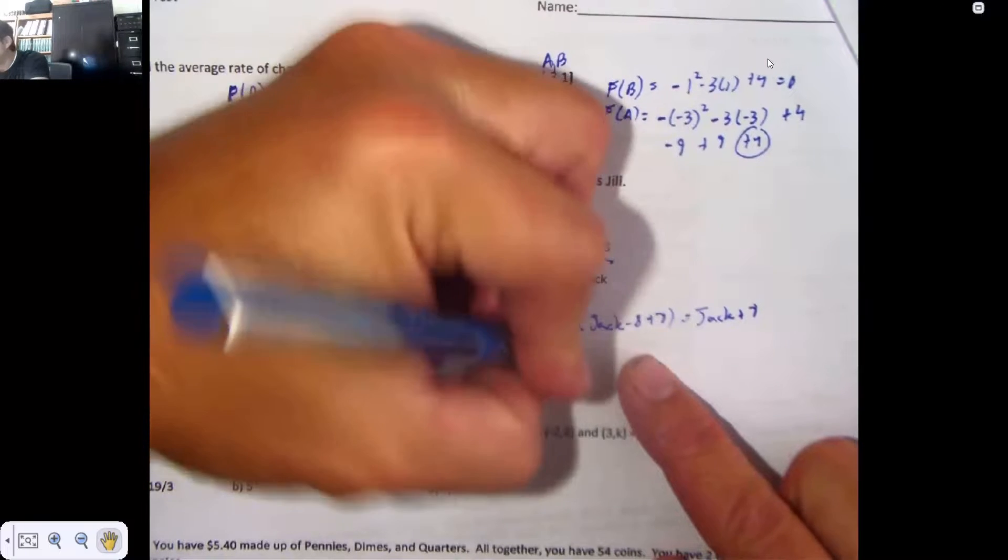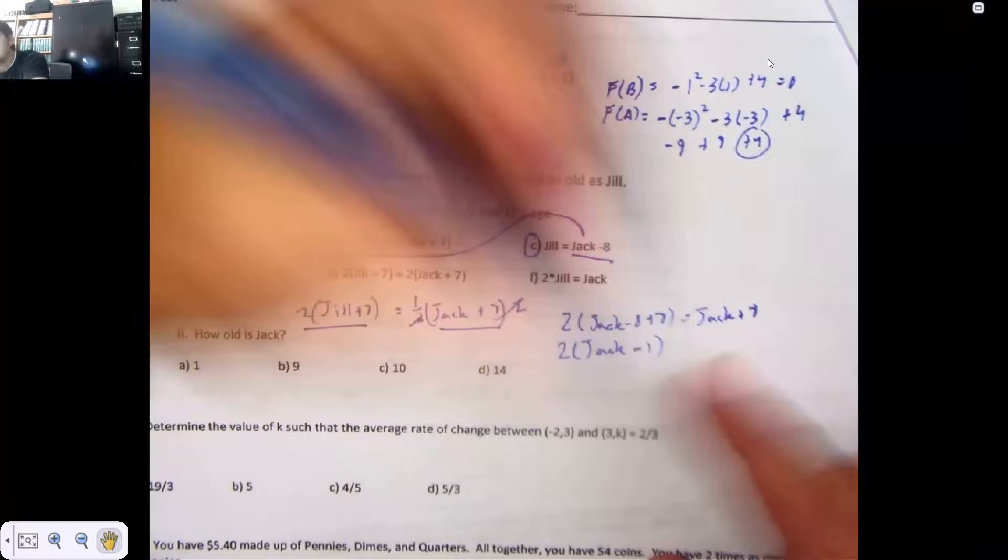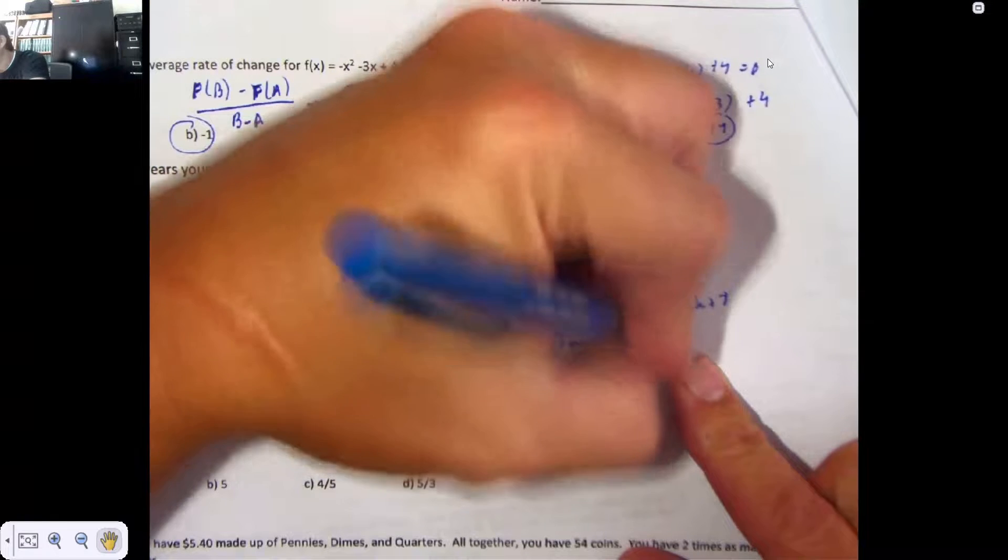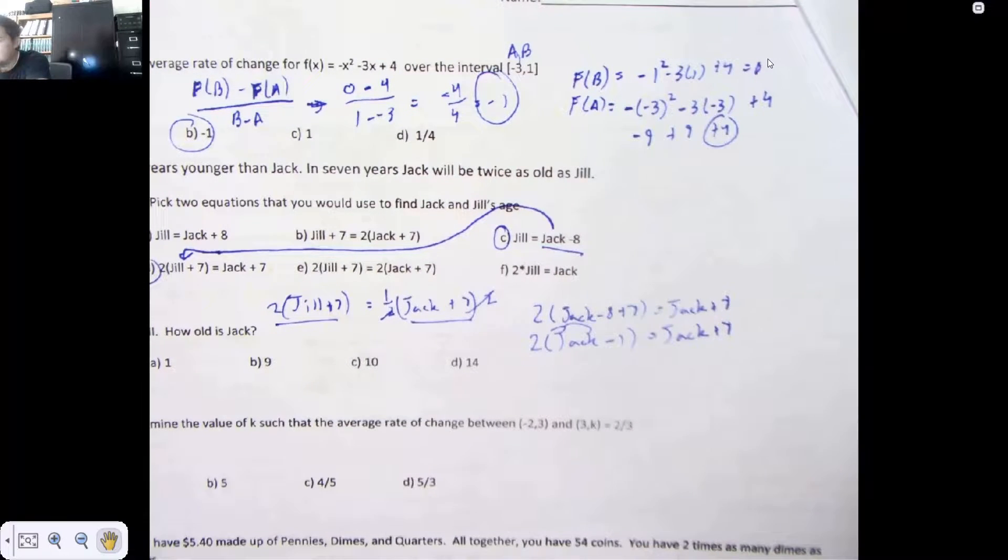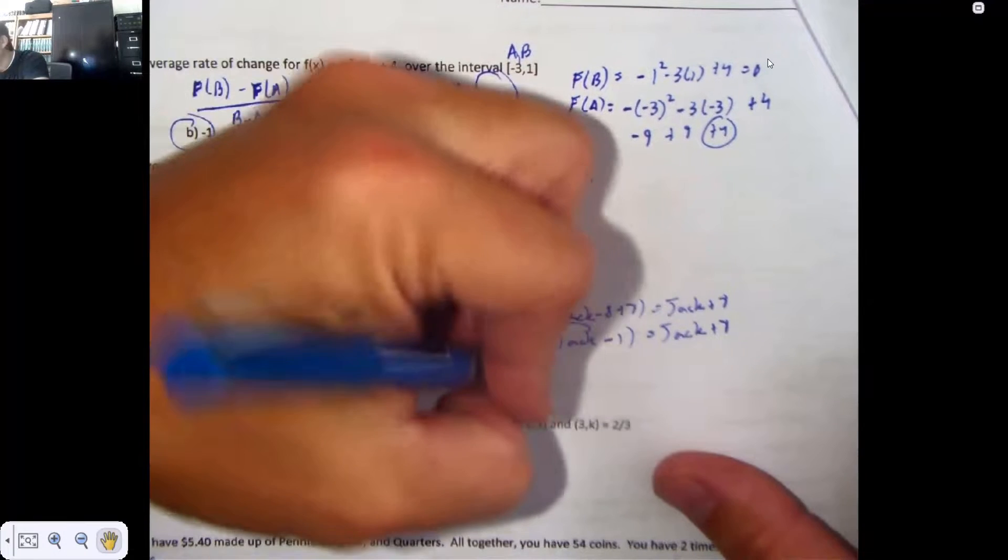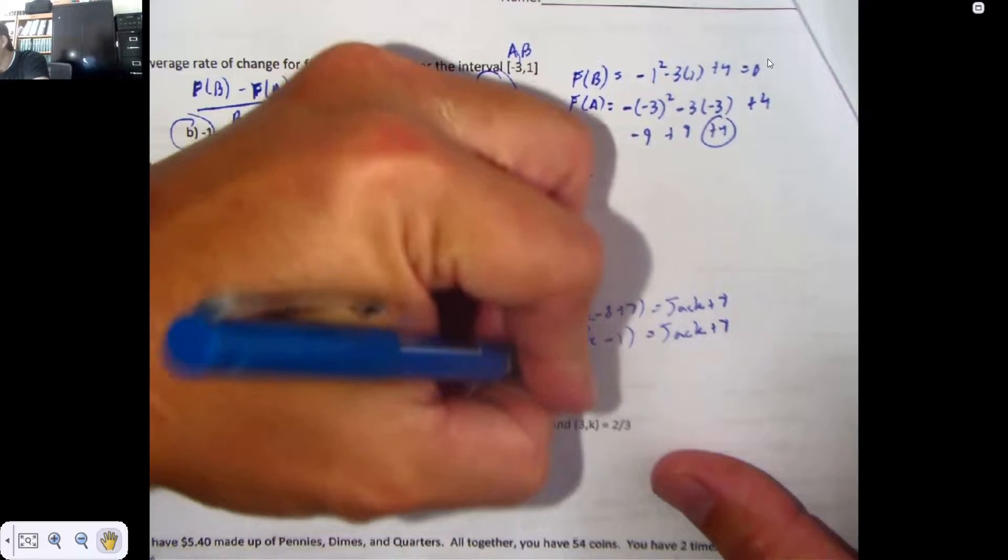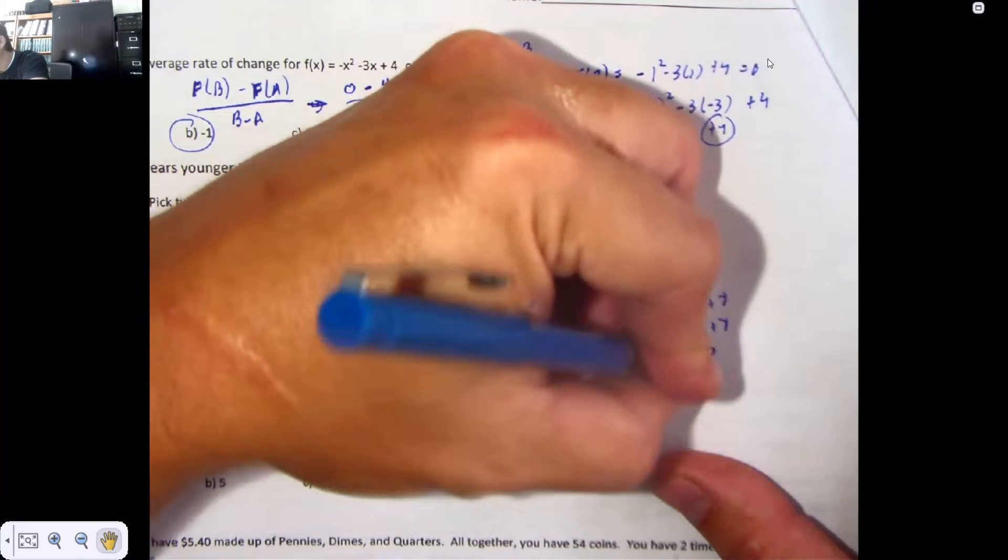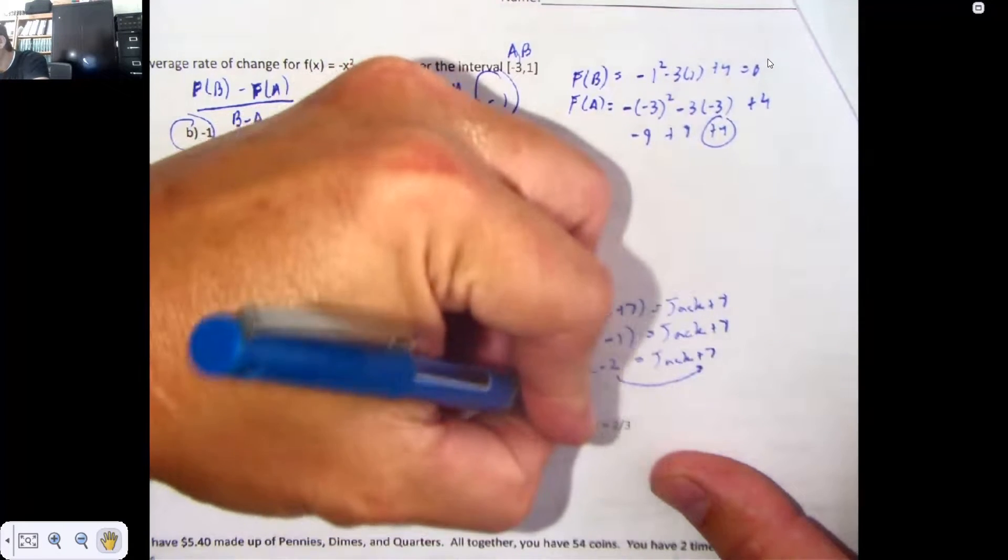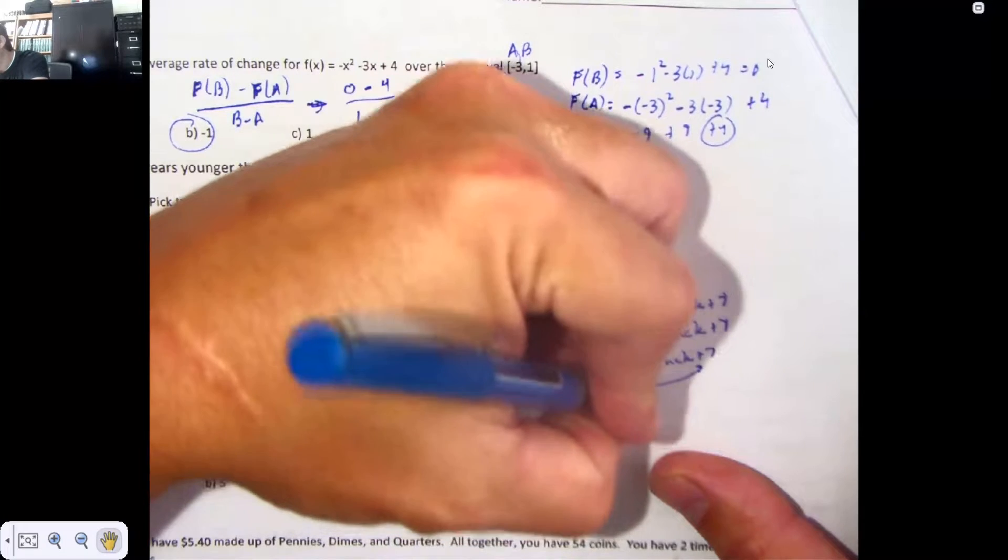If you want, clean up the parentheses. A -8 plus a 7 is a -1. Every one of you has heard of the distributive property. I don't care if there's a name in there or not. It's still the distributive property. Twice a Jack, take away a 2, is equal to a Jack plus a 7. Add 2. Twice a Jack is equal to a Jack plus a 9.